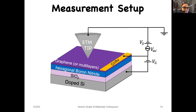Here is the measurement setup: a graphene or multi-layer graphene sheet on top of hexagonal boron nitride. We deposit a metal contact using a stencil mask, resting on a silicon oxide wafer followed by doped silicon. The doped silicon allows us to apply a gate voltage to tune the carrier density in our graphene film. Our STM tip is grounded and we apply a bias and modulation voltage to our sample to perform point spectroscopy. The studies interchangeably use monolayer graphene, bilayer graphene, or trilayer graphene.